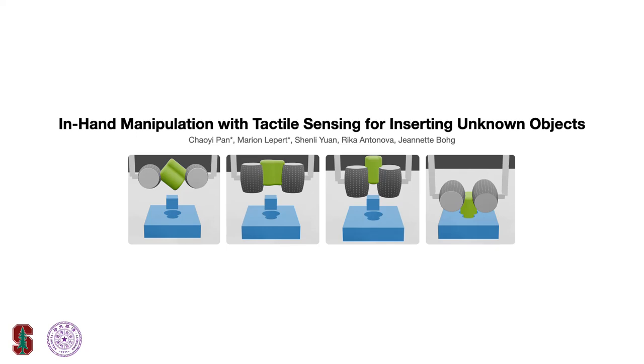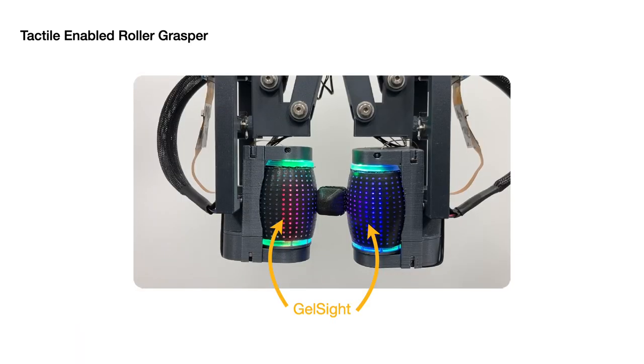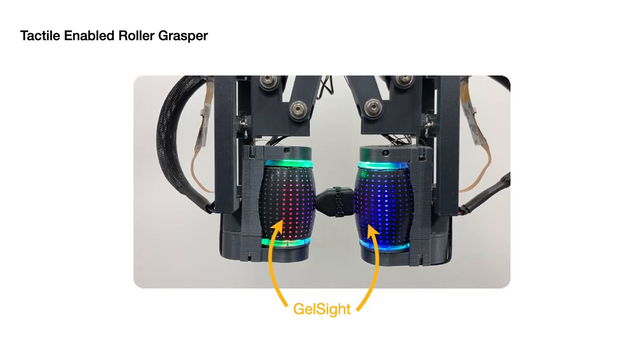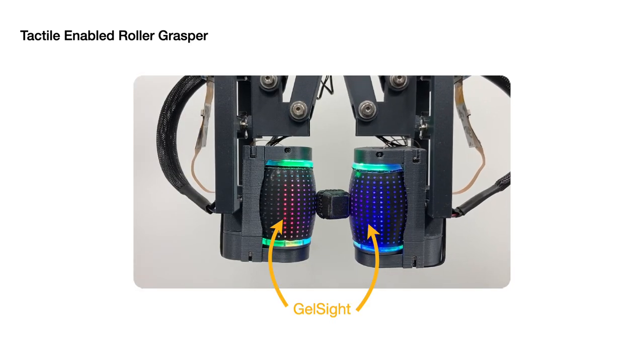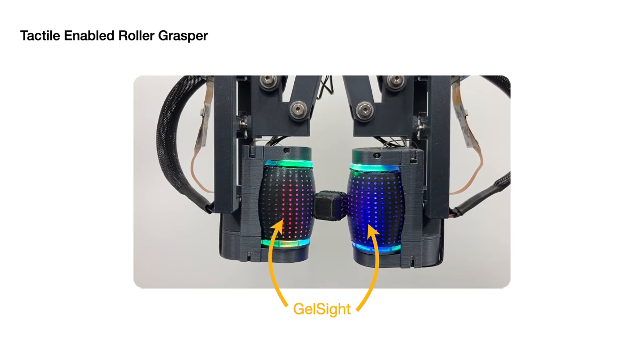The goal of our work is to reorient unknown objects in hand to fit inside a hole using only tactile sensing. Our work is inspired by the novel tactile-enabled Roller Grasper, which reorients objects by rolling them in hand.